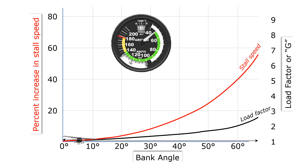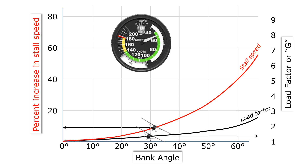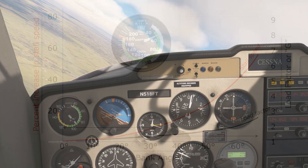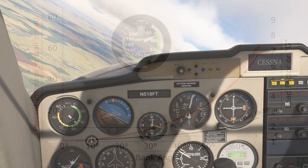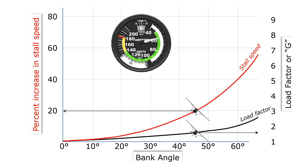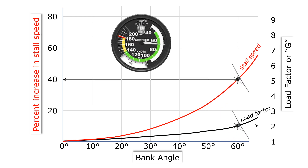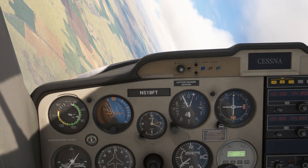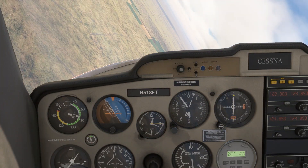We see what happens at different bank angles. Here we are at 30 degrees — this is what that looks like in the Aerobat reading the g-force off the accelerometer. Here we are at 45 degrees; we require more back pressure to hold altitude, and load factor and stall speed go up. At 60 degrees we're at 2 g's — the stall speed is increased about 40%. The formula is to take the square root of the load factor, which is about 1.41, and multiply that by the 1-g stall speed to get our increased stall speed.